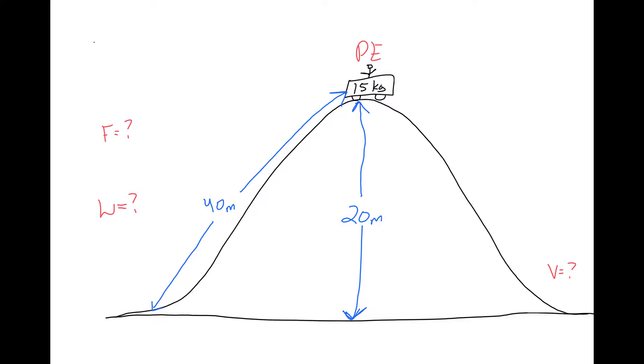All right, so first things first, if we take our cart up the hill, we're going to find the potential energy first. It's potential energy. It's equal to mgh, mass times the acceleration due to gravity. So it's 15 kilograms times 10 meters per second squared times 20 meters. That's how tall our hill is.